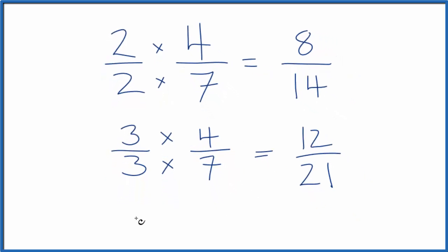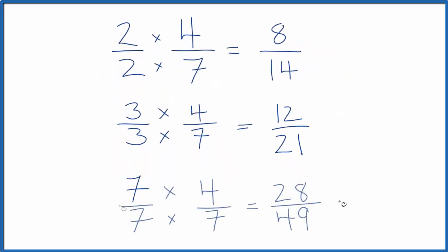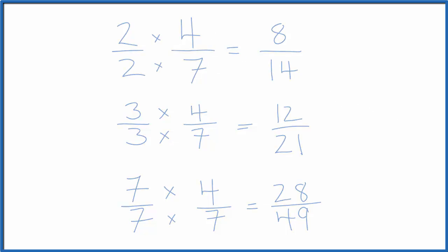Let's do one more — how about seven over seven? Again, we end up with another equivalent fraction to four-sevenths. If you divide twenty-eight by forty-nine, you will get the same decimal value as four-sevenths. This is Dr. B looking at some equivalent fractions for four over seven. Thanks for watching.